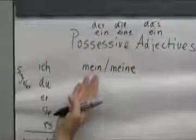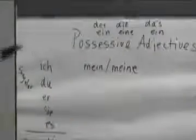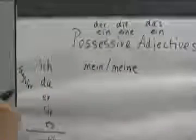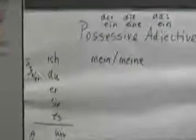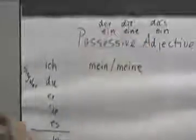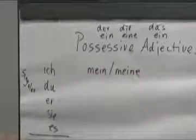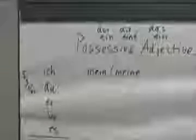So if you have a der or das word, when you say that something is yours, like der Kuli, it would have to be mein Kuli. If you talk about a die word, die Jacke, remember, die became eine. So mein has to add an e. That's the reason why you have different endings on these possessive adjectives.